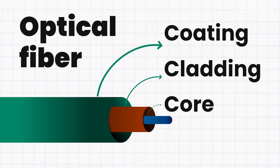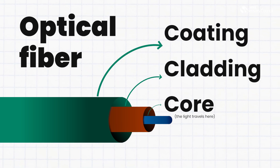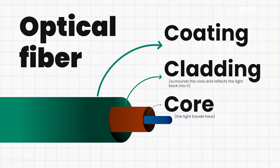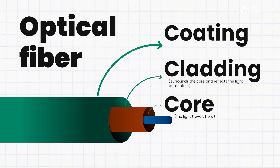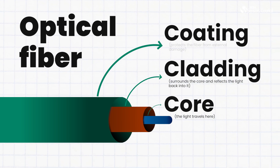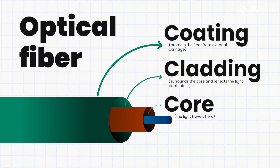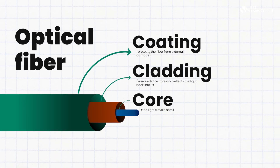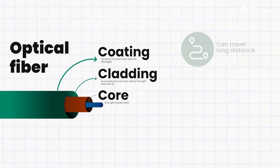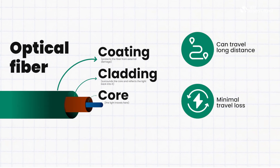The core is the central part where light travels. The cladding surrounds the core and reflects the light back into it, and the coating protects the fiber from external damage. This structure allows light to travel long distances with minimal loss.